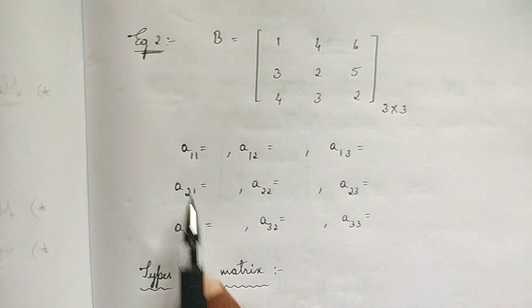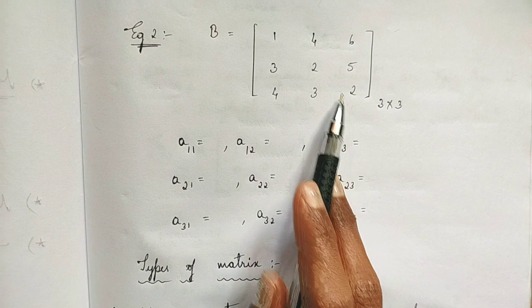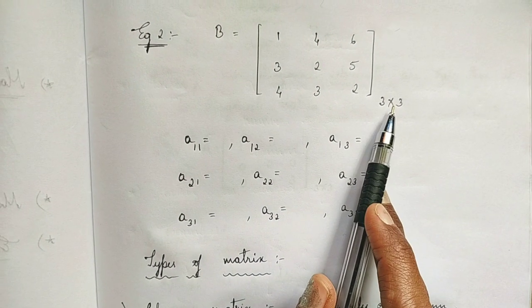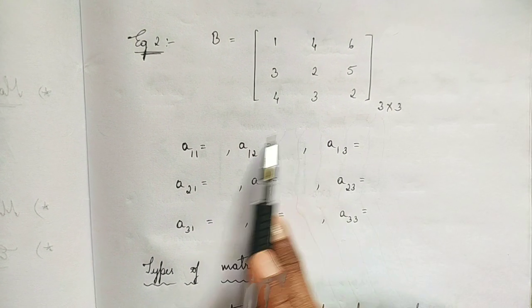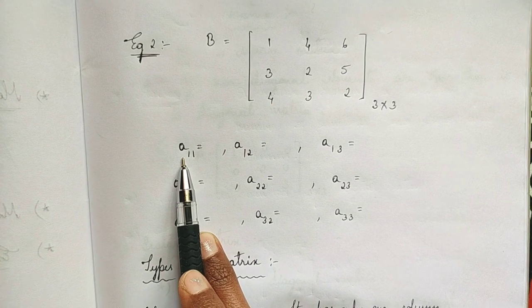Let us check out one more example. So matrix B equals [1, 4, 6; 3, 2, 5; 4, 3, 2]. This is a matrix of order 3 cross 3. Tell me which is the a(1,1) element — the 1,1-th element.